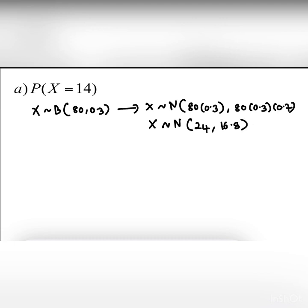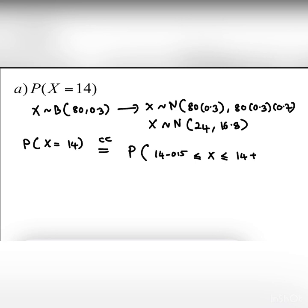For part A, probability X equals 40. We approximate binomial to normal. X ~ B(80, 0.3) approximated to normal. Because n is greater than 50, we do approximation. X equals 40, and after we do the continuity correction, for the lower bound we subtract 0.5 and for the upper bound we add 0.5. So we get probability 39.5 ≤ X ≤ 40.5. Then we do the standardization to get the normal z-values.